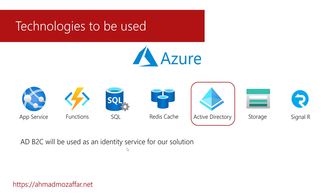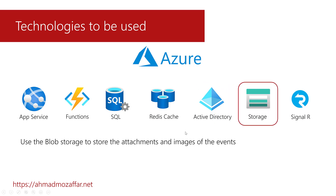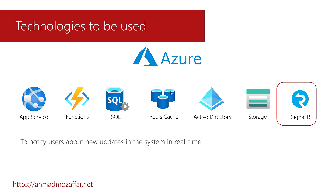Then we will use storage. Basically, we will use the Azure Blob Storage service to store all the attachments and images for the events, or the unstructured data for the system. We will also use the Azure SignalR Service so we can send messages and notifications in real time to the users of the system to notify them about anything happening right now.